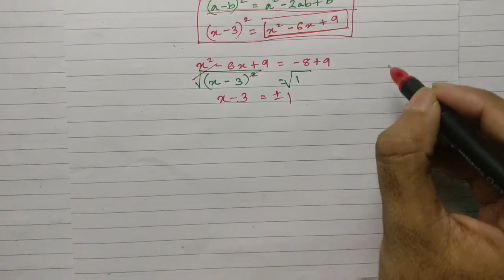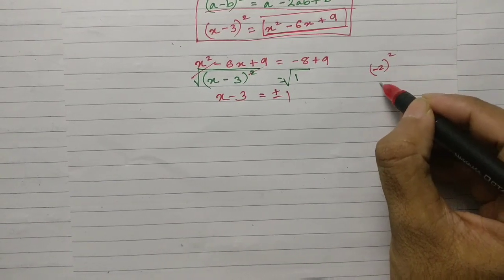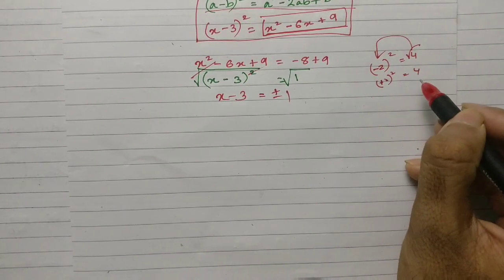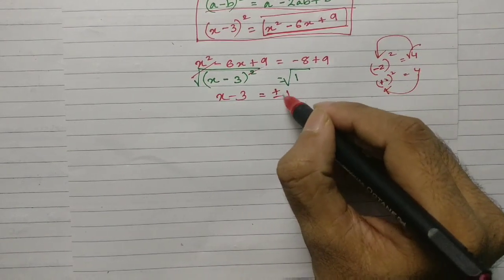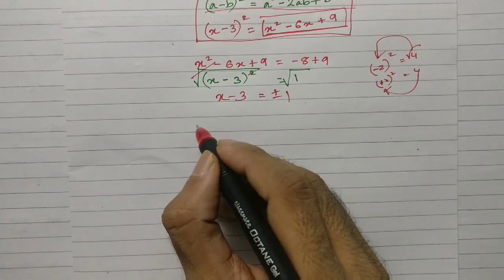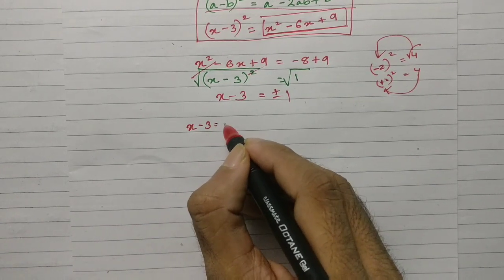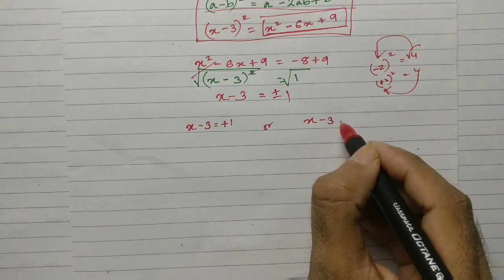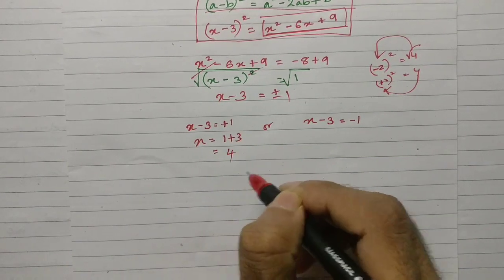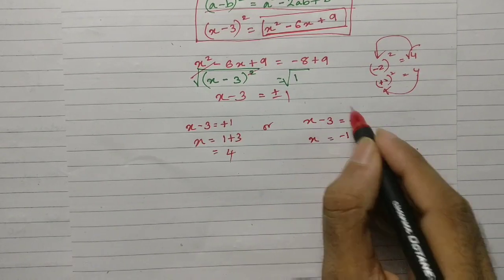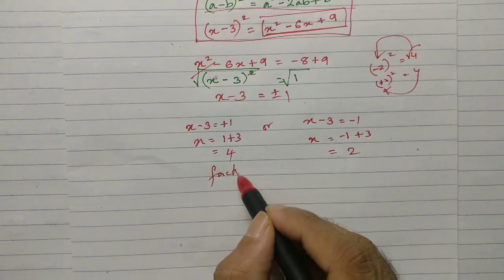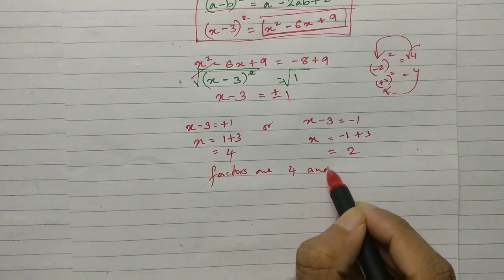The whole idea is to find the value of x. I don't want x minus 3 the whole square, so I take a square root on both sides. The root and the square cancel, leaving x minus 3. When taking a root, we put plus or minus, because minus 2 squared and plus 2 squared both give 4. So x minus 3 equals plus 1 gives x equals 4, and x minus 3 equals minus 1 gives x equals 2. Therefore, the factors are 4 and 2.